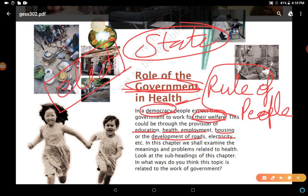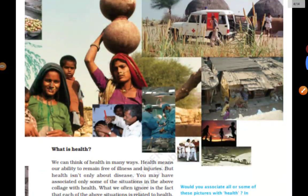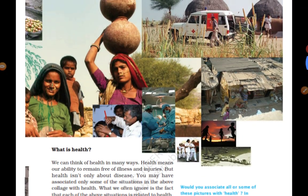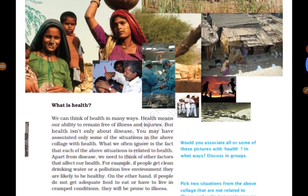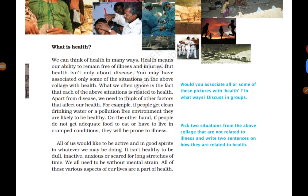In this chapter, we shall examine the meanings and problems related to health. Look at the subheadings of this chapter and think about in which ways this topic is related to the work of government. Let's start by looking at these pictures. The first topic is: What is health?